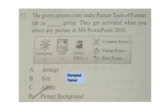Question 17: The given options come under picture tools or format tab in a specific group. They get activated when you select any picture in MS PowerPoint 2010. The answer is option C — Adjust.